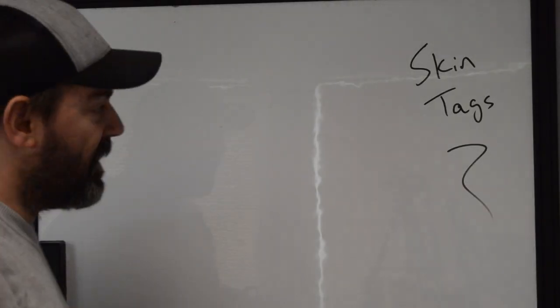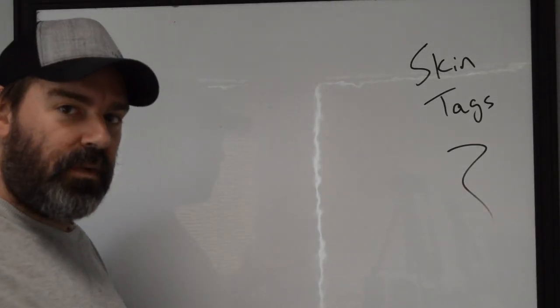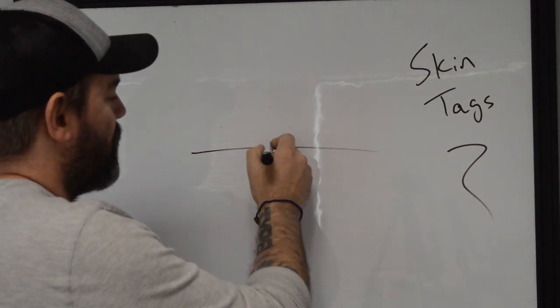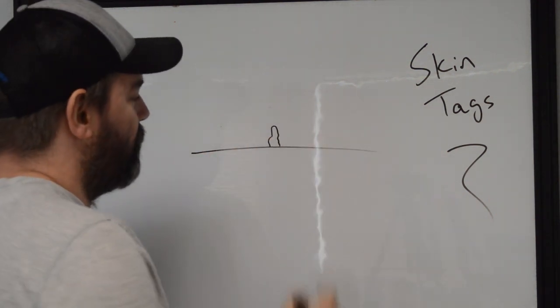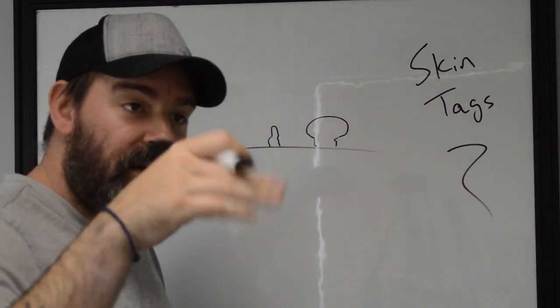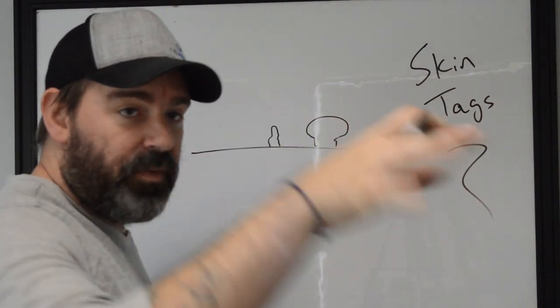Now that that's over with, skin tags. What are they? Well, usually what we're gonna see is base layer of the skin there's gonna be like this little growth that kind of comes up or maybe it'll be flat and long and wide or something else. It's just gonna be like an extension of the skin that's just not normal topography, right?